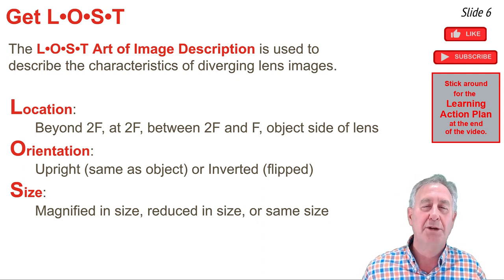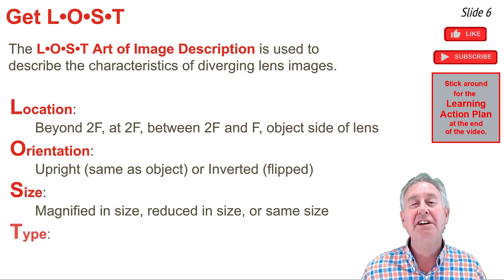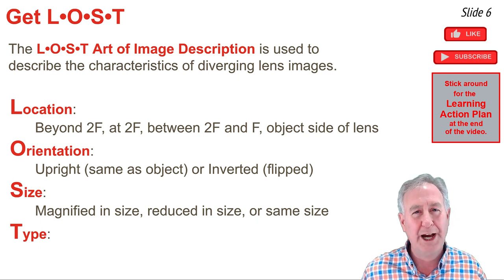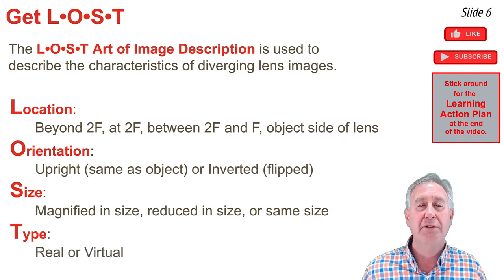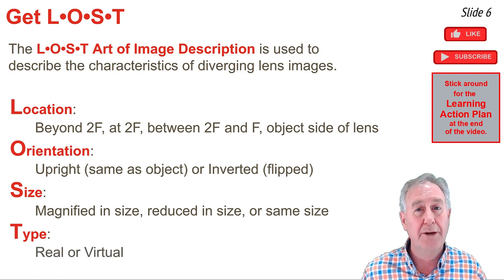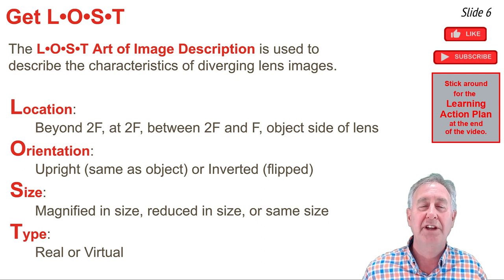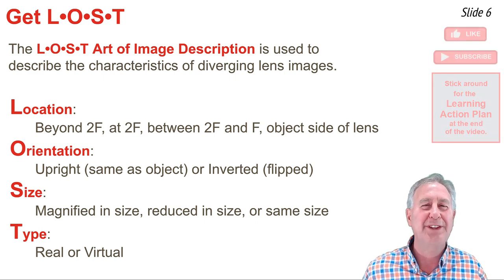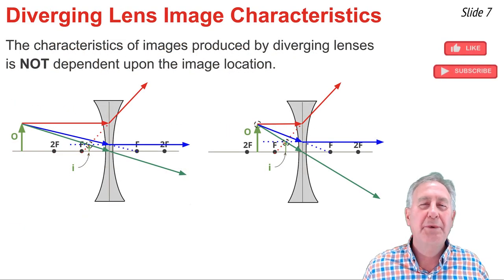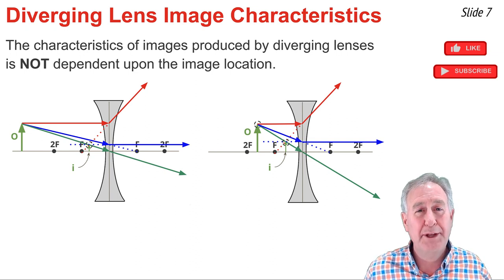The T of LOST refers to the type of the image, and there are two options. Images can be real or virtual. A real image results when the refracted rays converge or come together after passing through the lens. A virtual image is produced when the refracted rays diverge or spread apart after passing through the lens.